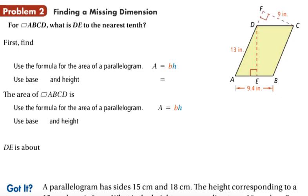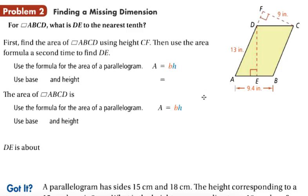Finding a missing dimension. For parallelogram ABCD what is the length of DE to the nearest tenth? We are looking for this altitude to the base AB. The first thing we're going to do is find the area of the parallelogram where we can use CF as the height. If we're using CF we're going to use AD as the base. Apply the area formula, base times height. Our base is segment AD, our height is CF, so we have 13 times 9 which is 117. Our area is 117 square inches.